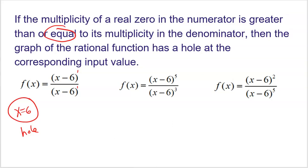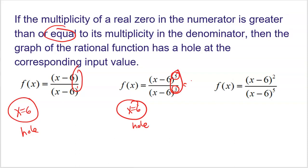Here we see another example where x equals six also makes both the numerator and denominator equal to zero. But the multiplicity in the numerator is five and the multiplicity in the denominator is three. The x minus sixes will reduce out, but because the multiplicity of the zero in the numerator is greater than the multiplicity of the denominator, that's still going to be a hole at x equals six. So if they're equal like one and one, or if the numerator has a greater multiplicity, that is a hole. This final example is not going to be a hole because the multiplicity in the denominator is greater than the multiplicity in the numerator — this is actually going to be a vertical asymptote at x equals six.